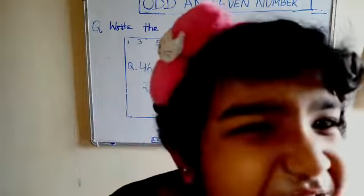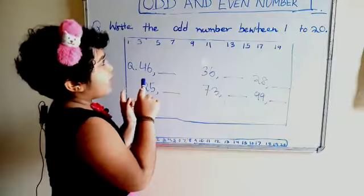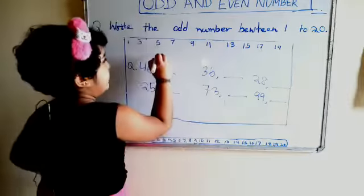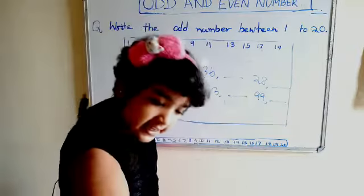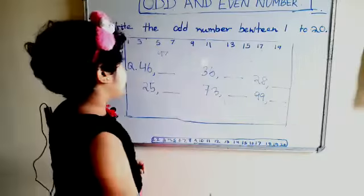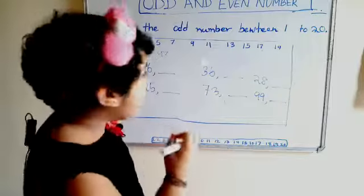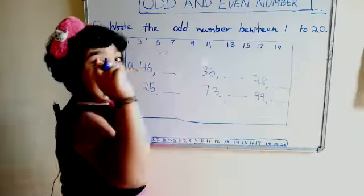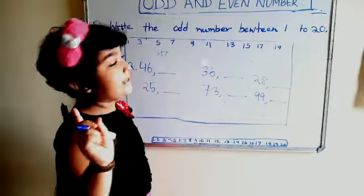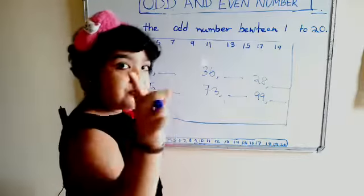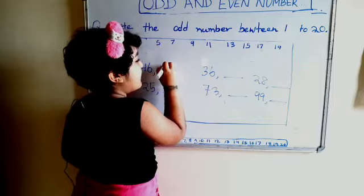अब मैं आपको कुछ questions पूछने वाली हूँ. 46 का after number क्या है? 47. लेकिन 46 एक even number है और 47 odd number है, इसलिए 46 के next even number को लिखेंगे — हम 47 नहीं लिखेंगे, हम 48 लिखेंगे.